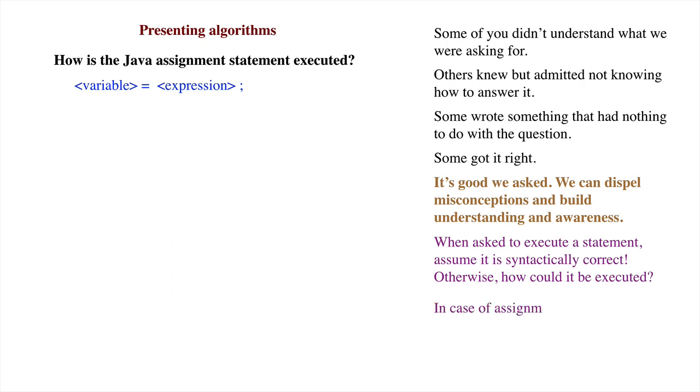For example, since we're talking about the Java assignment statement, we assume that the variable was already declared, and that the type of the expression is appropriate for the type of the variable.